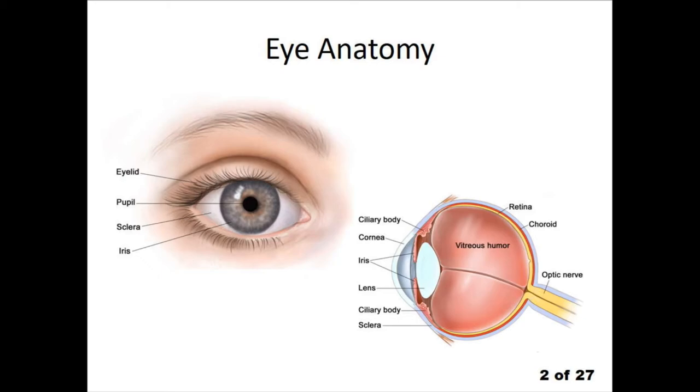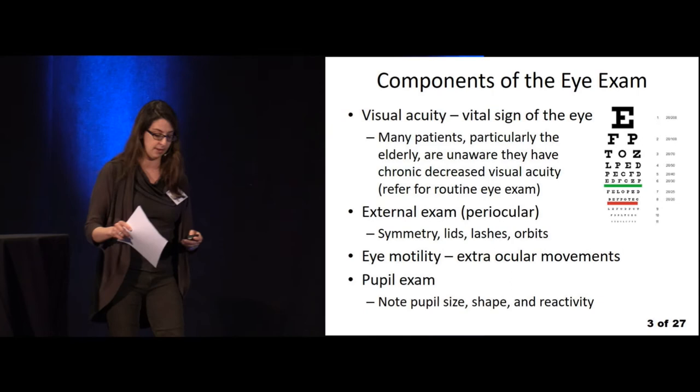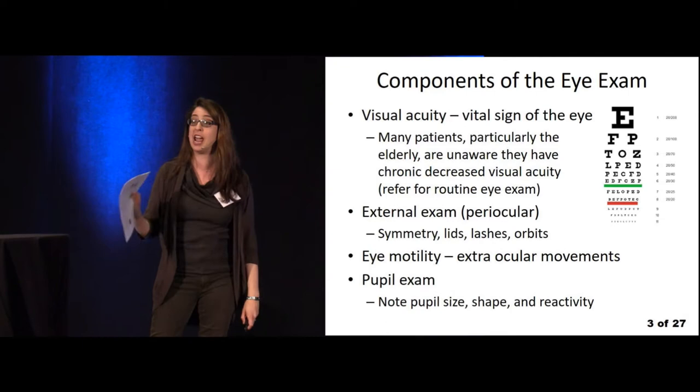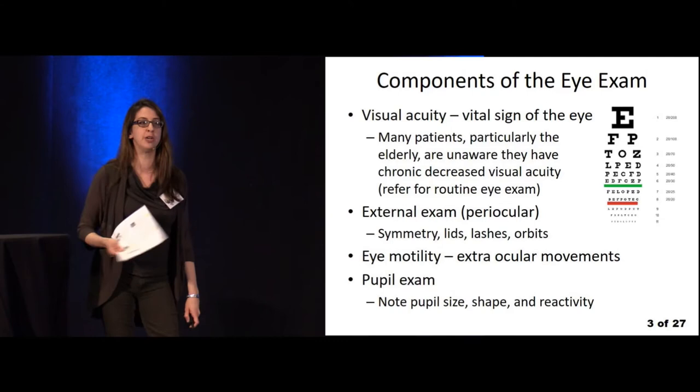Now we'll talk about the components of the eye exam. One of the most important things you need to document on every eye exam in your chart is visual acuity. Visual acuity is the vital sign of the eye.